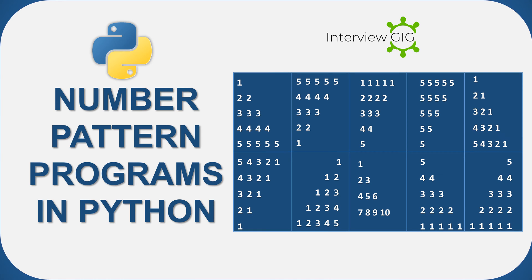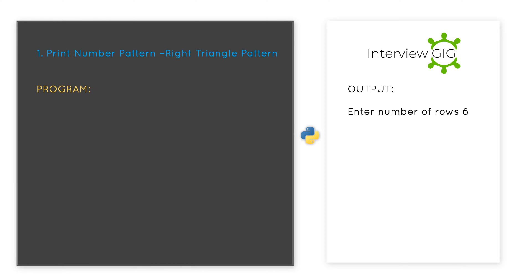In this video we will cover different number pattern programs in Python programming language, part 1. First program: print a number pattern or right triangle pattern 1 to 5.